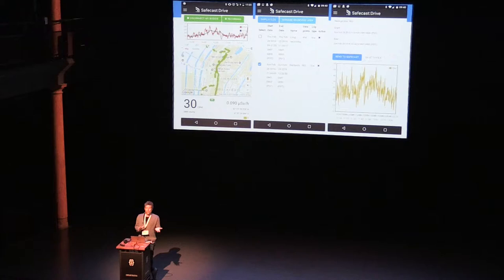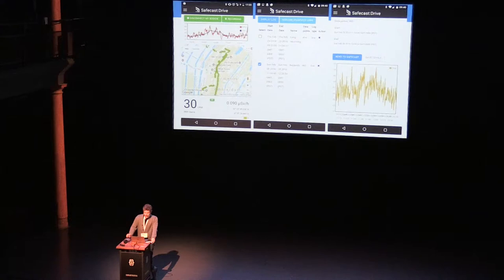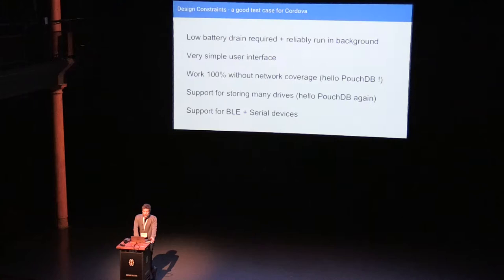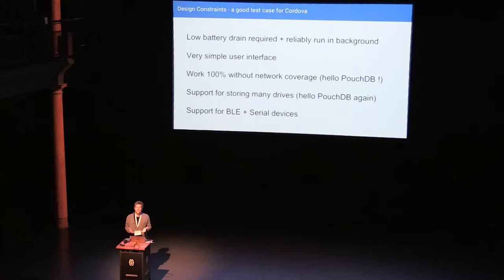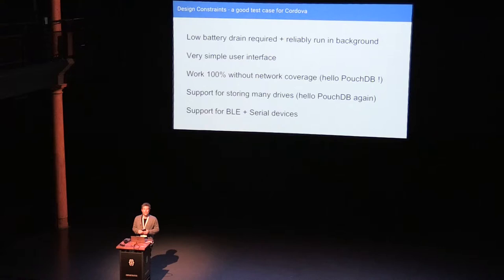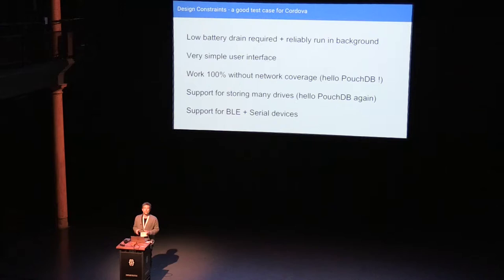What's interesting is that this app touches on a lot of points raised earlier during the day. It's an interesting Cordova use case because of several design constraints. First, it has to have very low battery drain. It needs to run in the background when the Geiger counter is connected — typically on long drives, I want Google Maps running too, so it needs to run reliably in the background. Second, the user interface has to be simple — it's literally a two-button interface: connect and record.